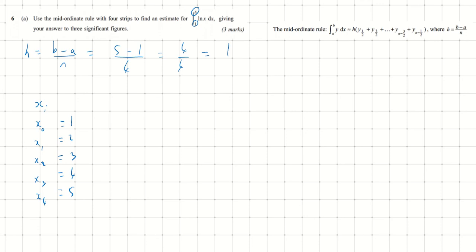For the mid-ordinate rule, we don't actually need x0, x1, x2, x3, x4. We need the in-between values. x0.5 is halfway between x0 and x1, which is 1.5. x1.5 is halfway between x1 and x2, which is 2.5. x2.5 is 3.5, and x3.5 is 4.5.